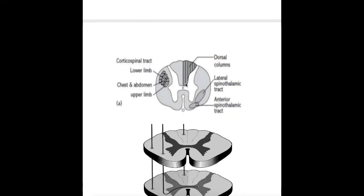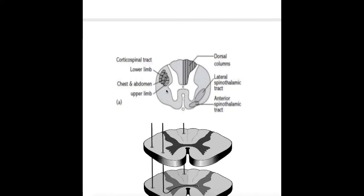Three main tracts involved in hemisection of the spinal cord are the dorsal column, the lateral corticospinal tract, and the lateral spinothalamic tract. Two of the tracts are ascending tracts — the dorsal column and the lateral spinothalamic tract — and the lateral corticospinal tract is the descending one.